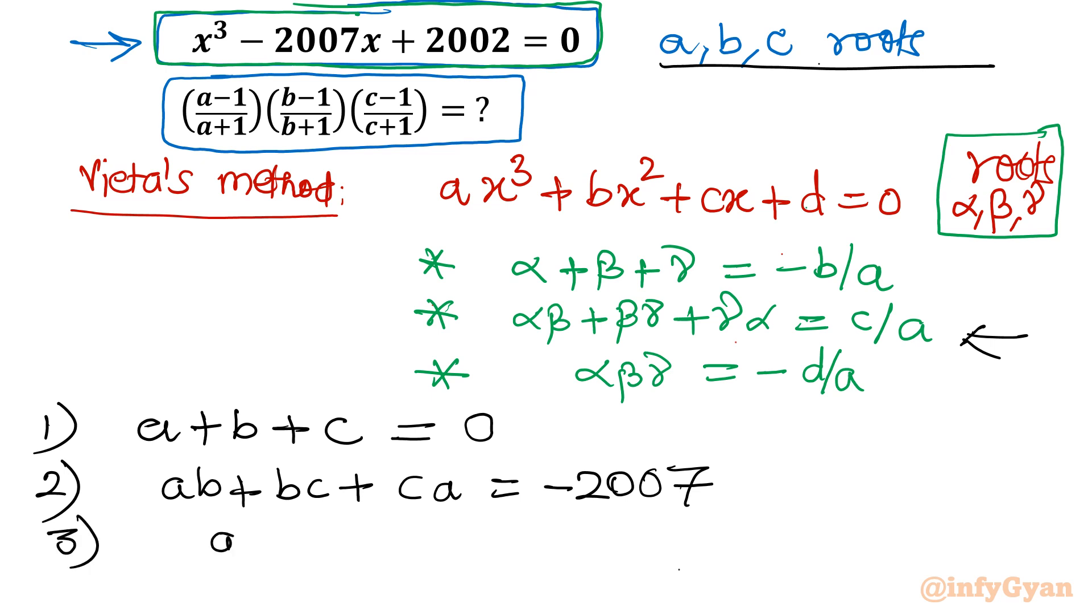Equation number three: product of all three roots a, b, c. As per formula, it is d over a with negative sign. So d is 2002, so I will write minus 2002. This set of equations we will use once we simplify our expression which we have to evaluate.